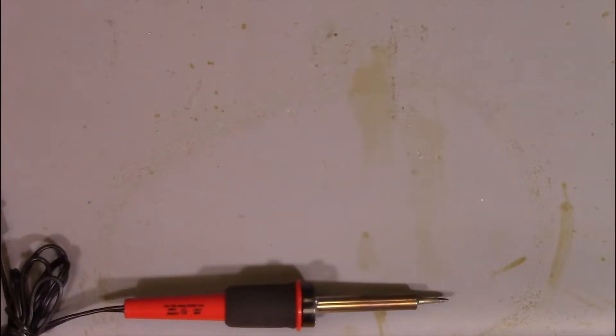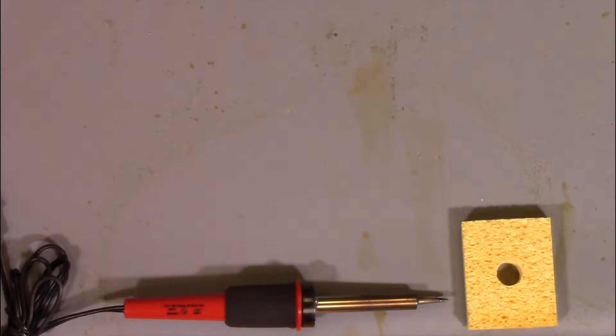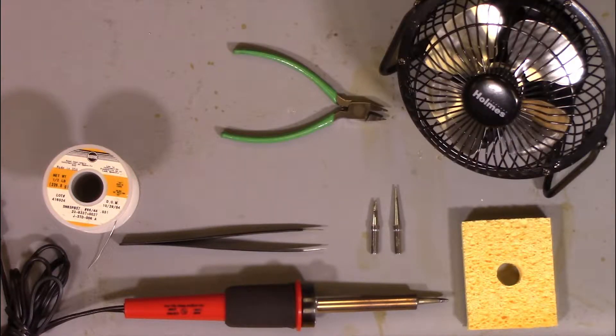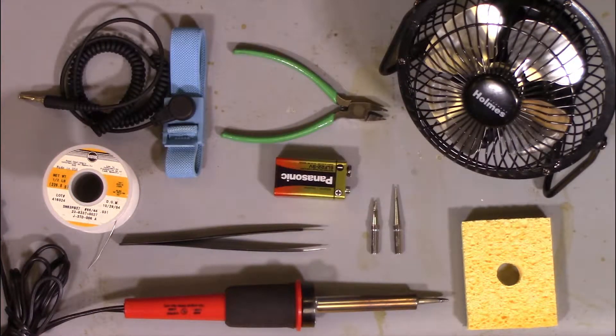To complete this project, you'll need a soldering iron, a sponge, a 1.2 millimeter and 2.29 millimeter screwdriver type iron tips, some solder, ESD tweezers, wire cutters, a small fan, ESD wrist strap, and a 9 volt battery.